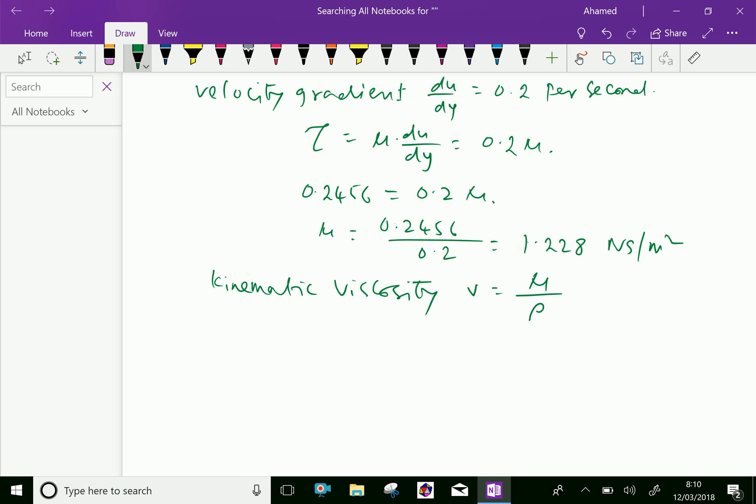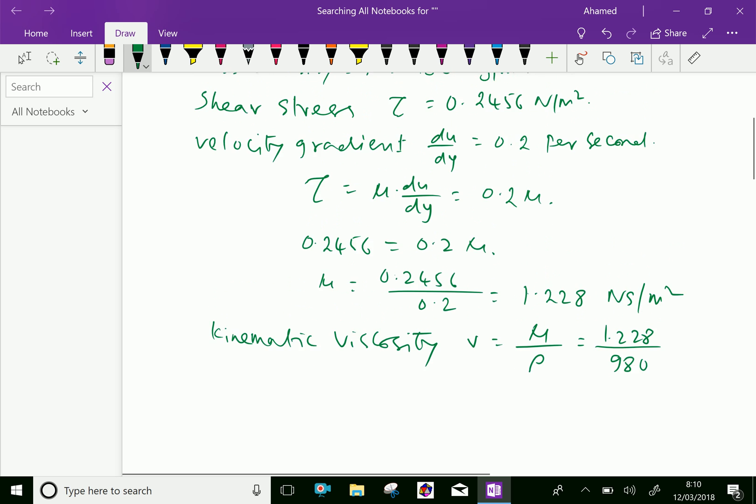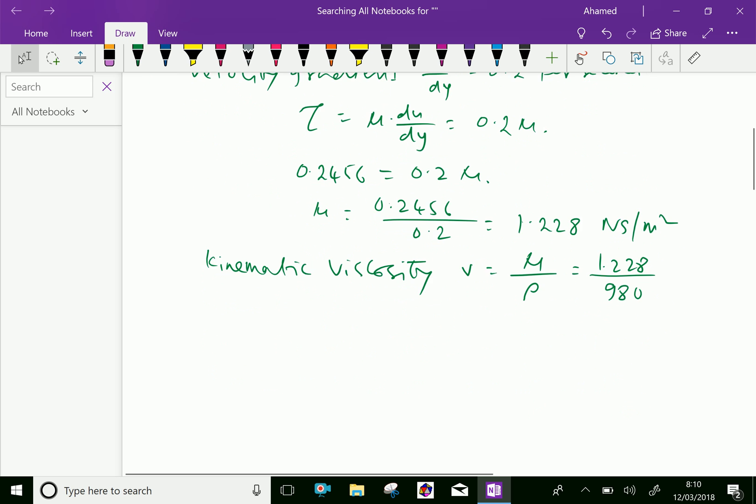Viscosity we got 1.228 over density is 980, mass density is 980, which equals 1.228 over 980.